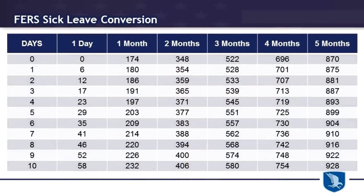Now, you get no annuity calculation for the eight days, so if you use those hours up at the end of your career for doctor's appointments and such, be careful. Looking at the sick leave conversion chart one more time, the eight days is actually 46 hours, not 64 hours. So be careful — if you use up too many hours, you could lose a whole month of annuity calculation for the rest of your life. Be careful managing those sick leave hours as you plan for retirement.